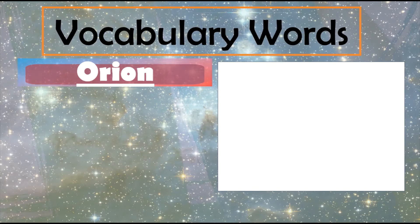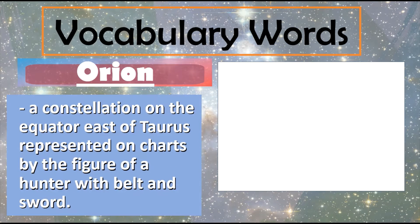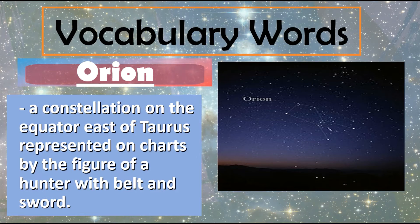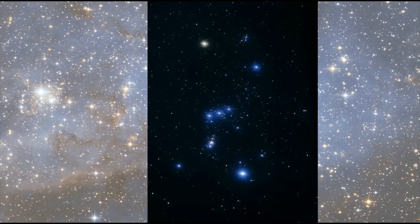The next word is Orion. Orion is a constellation on the equator east of Taurus, represented on charts by the figure of a hunter with a belt and a sword. Here is another picture of Orion. How many big stars can you see? 1, 2, 3, 4, 5, 6, 7, 8. There are 8 big stars that you can see in this Orion constellation.